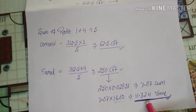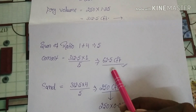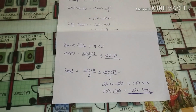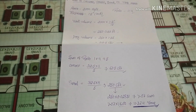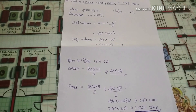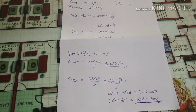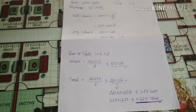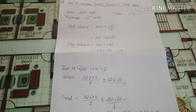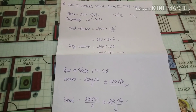So this is our quantity of sand and this is our cement quantity. This is how we can find out the cement and sand quantity for tile work. Please subscribe to my channel, like the video, and share it. Thank you so much for watching.